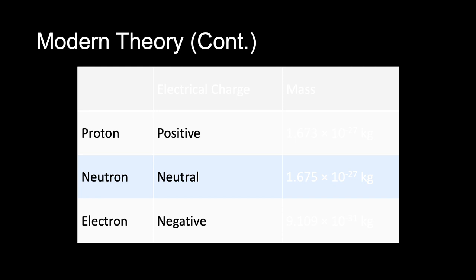Protons and neutrons compose the majority of the mass of an atom. The electron is the third principal part of the atom. It has one unit of negative electrical charge and a mass of 9.109 × 10⁻³¹ kilograms. Compared with the mass of a nucleus, an electron has very little mass, yet each electron is moving extremely fast in its orbit and has significant kinetic energy.